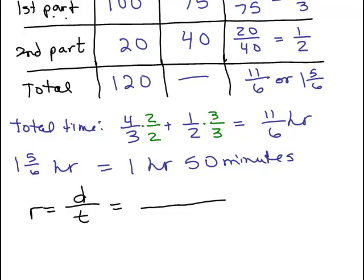what was the total distance? That was 120 and what was the total time? Right here, 11 sixths, right? That's the total time.